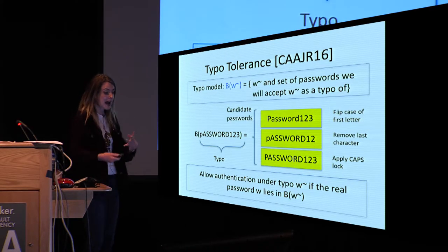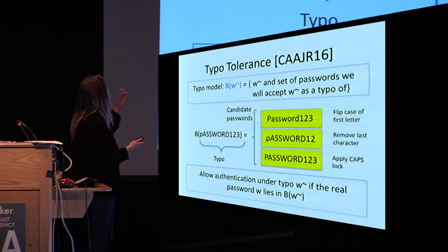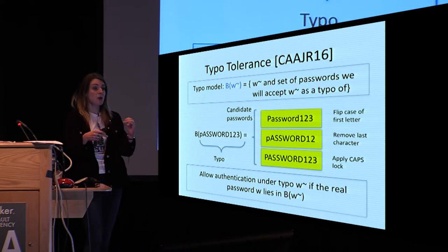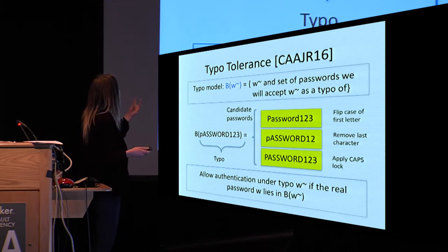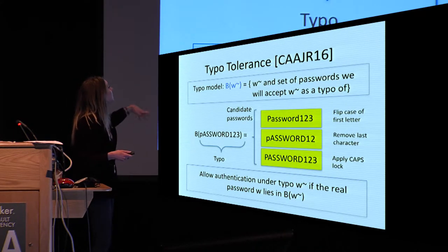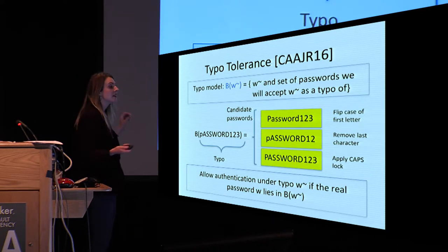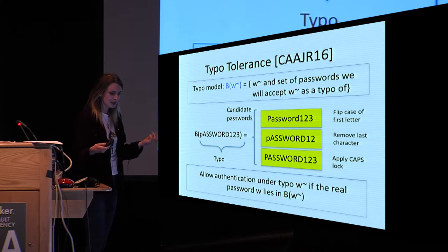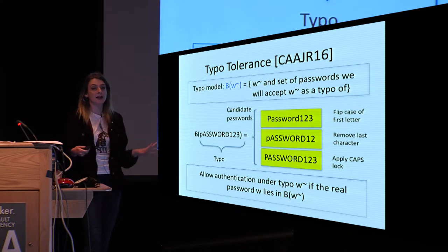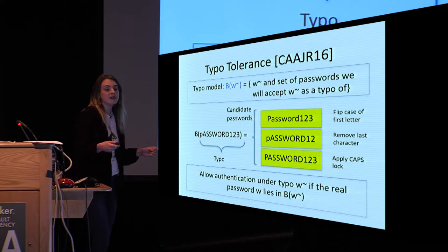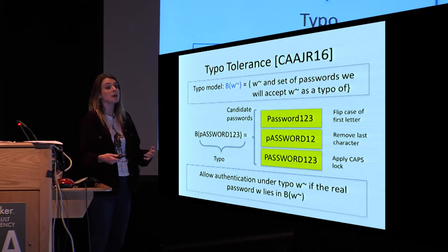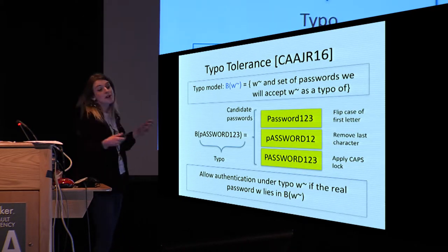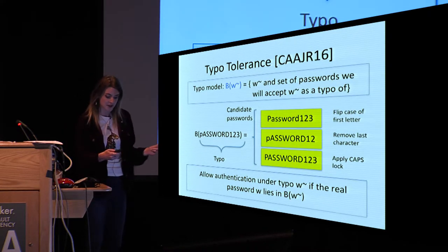The motivation for this work is: how can we correct more typos securely than is possible with relaxed checking? To discuss correcting typos, we need to define what a typo is. We associate a typo model with the password distribution, defining for each possible typo the ball—the set of passwords we would accept as a typo of it. For example, for an oddly capitalized string, we can generate its ball by applying corrector functions based on known user typo patterns, such as applying caps lock or flipping the case of the first letter. We allow authentication under a typo if the real password lies in its ball. We must define the typo model carefully—a scheme accepting any string would have very bad online security—but going forward we assume a good typo model, so online security is handled and we focus on the offline case.